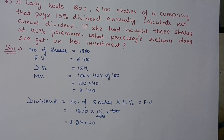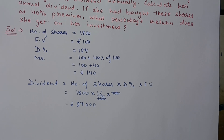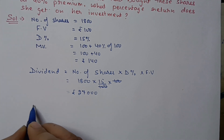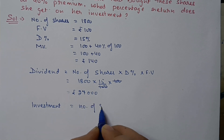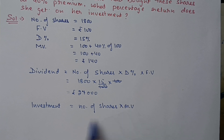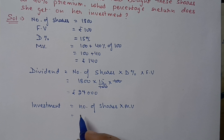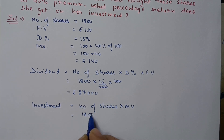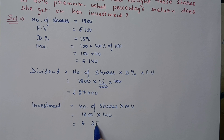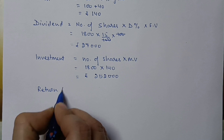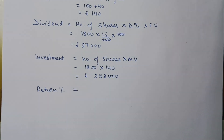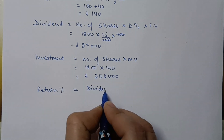Next we have to find what percentage return she gets on her investment. First we calculate the investment, then the return percentage. Investment is equal to number of shares multiplied by market value. The number of shares is 1800 and market value is 140 rupees, giving an investment of 2,52,000 rupees. Return percentage is equal to dividend divided by investment multiplied by 100%.